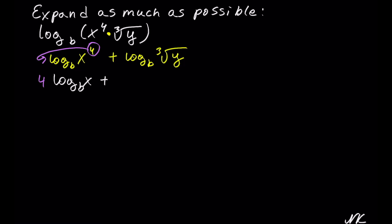For the second log, we have log with the base b of cube root of y. Before we can apply the power rule, we need to rewrite the root as a rational exponent. So this is cube root of y to the first, which is log with the base b of y to the one-third power, since the root goes into the denominator of the exponent.